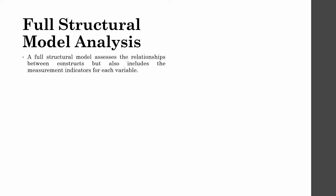In the previous lectures, we did a simple structural model whereby we had one IV and one DV, and then we did a path analysis or a structural model with composite variables. In this case, in Full Structural Model Analysis, a full structural model assesses the relationship between constructs but also includes the measurement indicators for each variable.